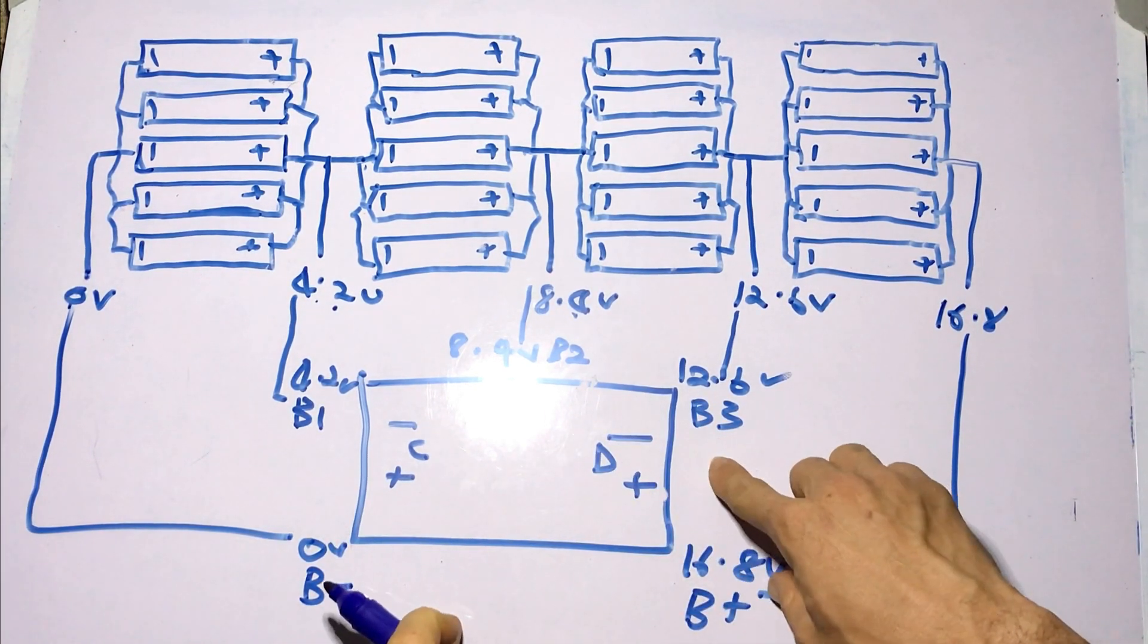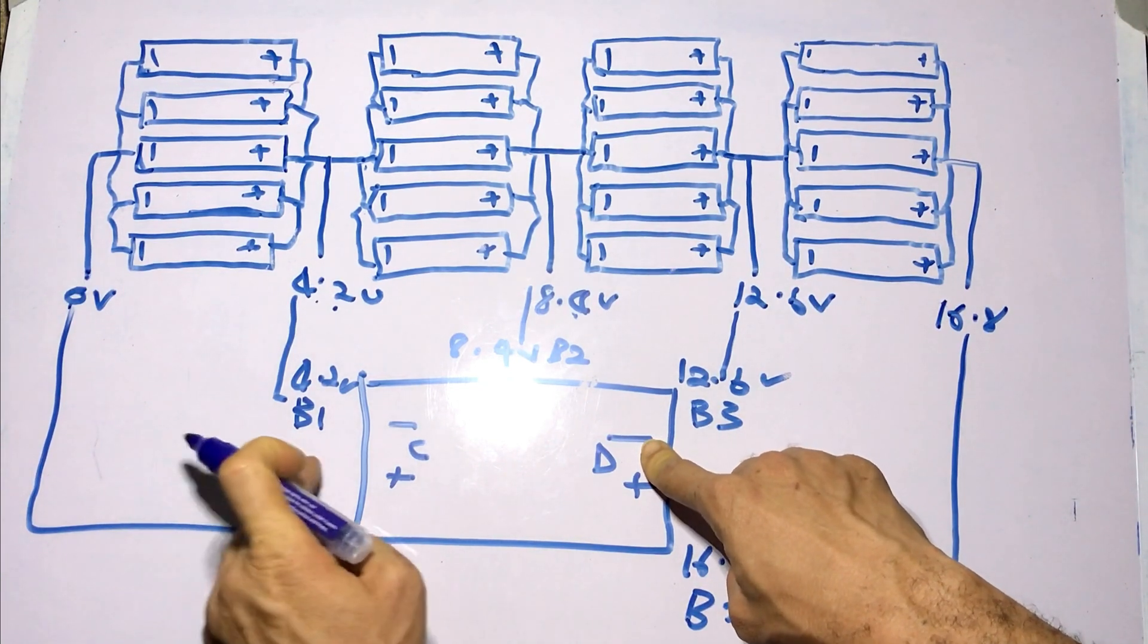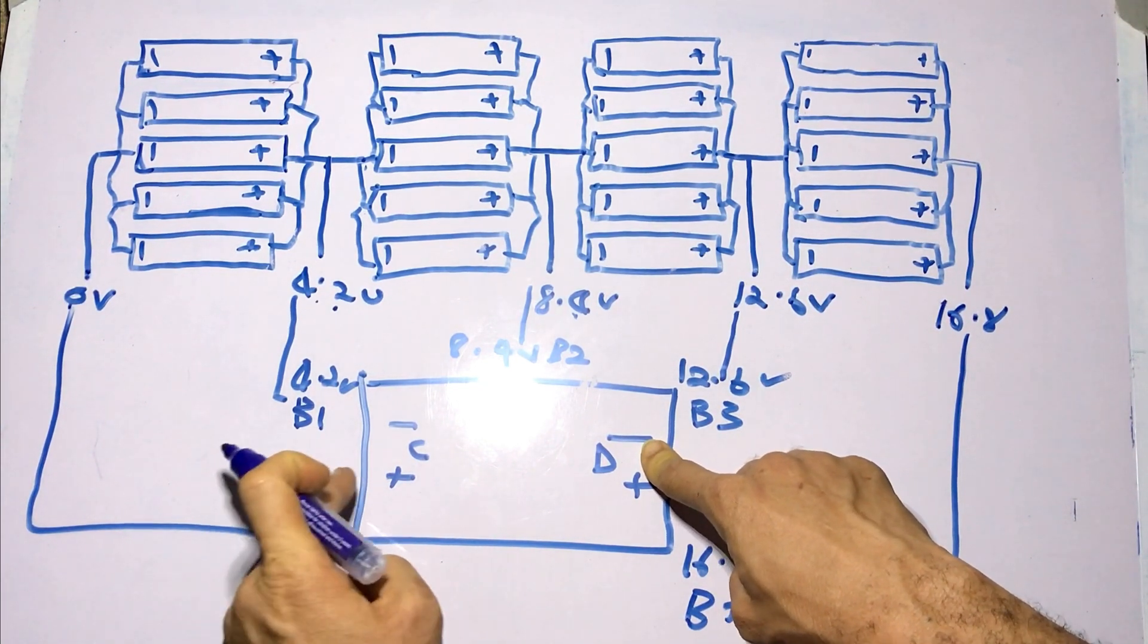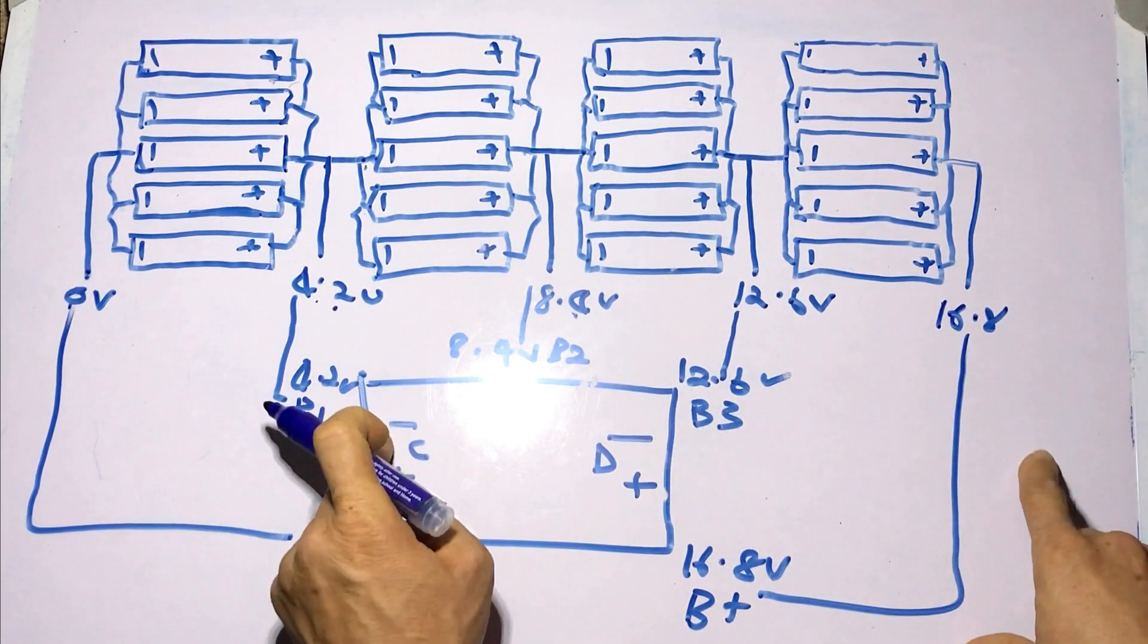Your load will be hooked to your battery bank through this connection and the charging for your battery is done through this connection. So you hook your charger or wire from solar charge controller to this connection.